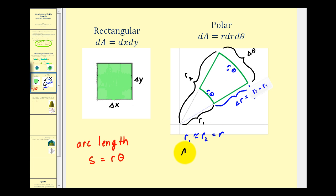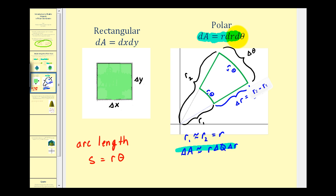From here, we can say that δA, the change in area, is approximately r·δθ·δr. Now you can see where this extra factor of r comes from — differential A equals r·dr·dθ. As the number of boxes approaches infinity, δθ → dθ and δr → dr. Hopefully this rough outline helps you understand why, when converting to polar form, we have this extra factor of r in the integrand.